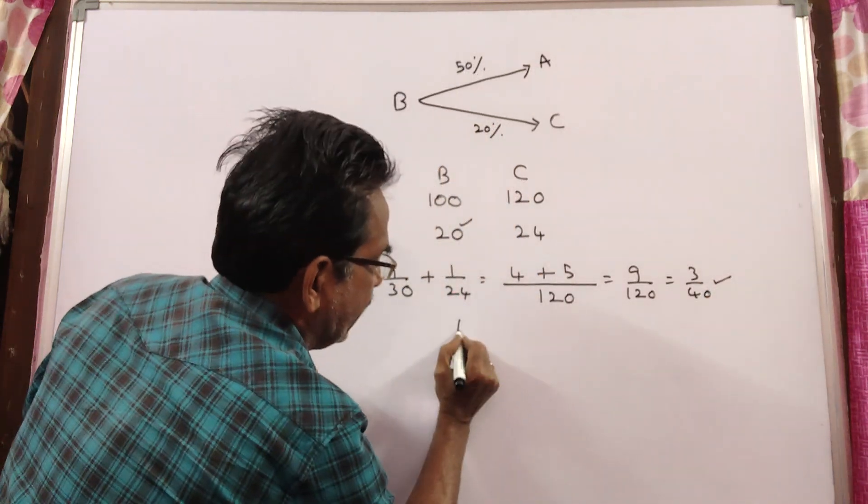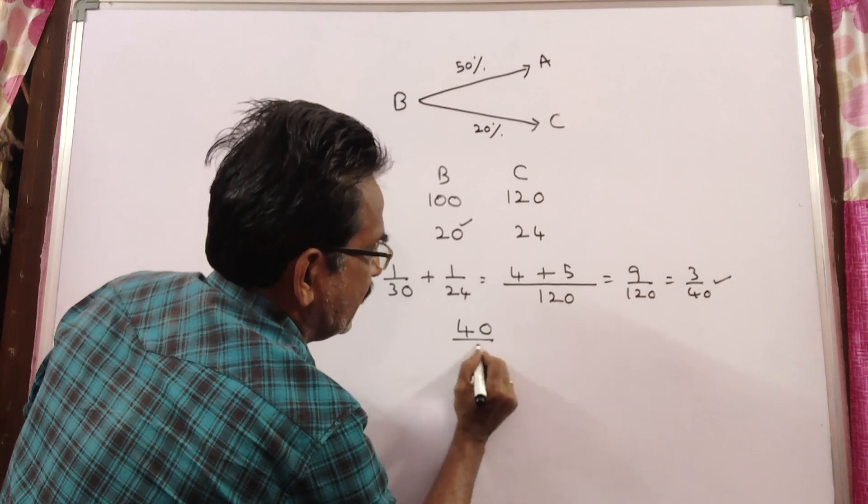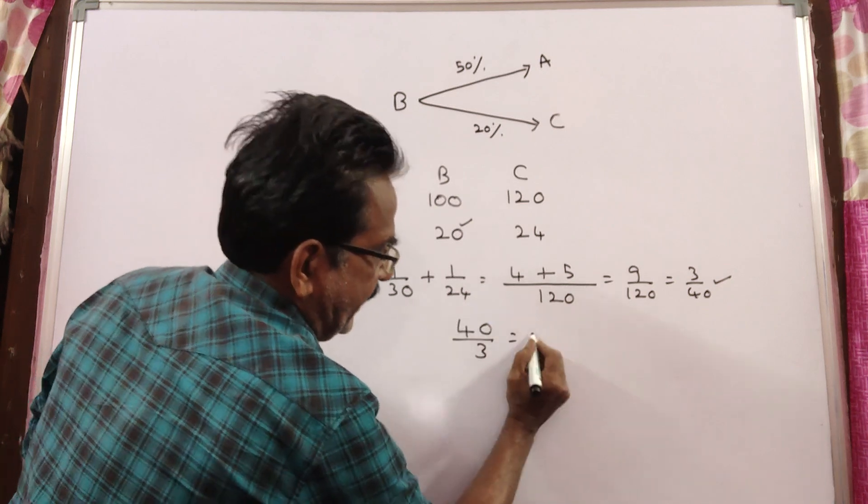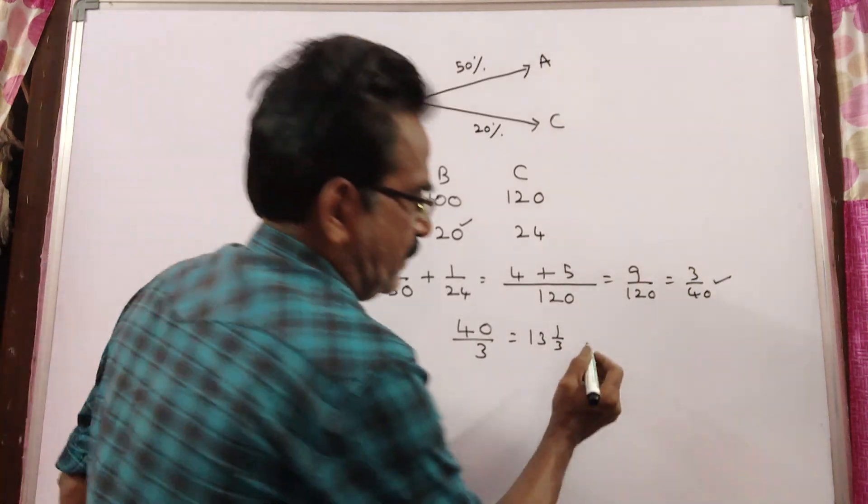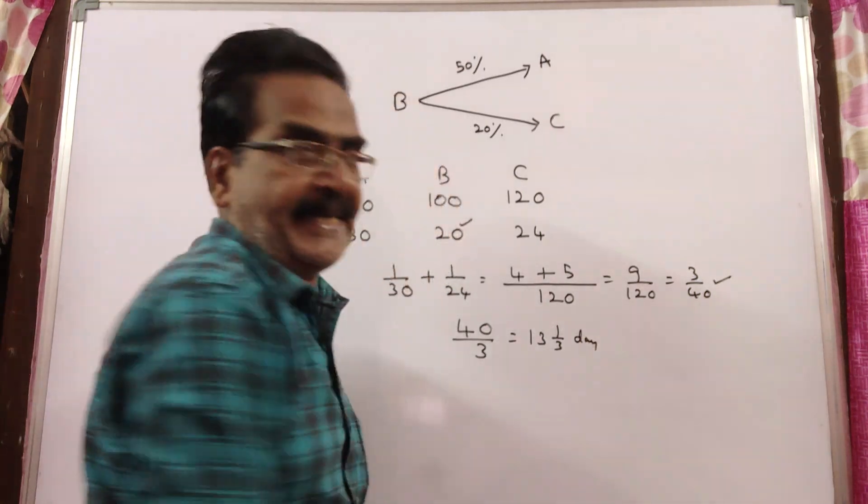So, on reversing the 3 by 40, A and C can complete the work in 40 by 3 days. 40 by 3 means 13 and 1 by 3 days, friends.